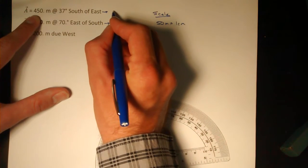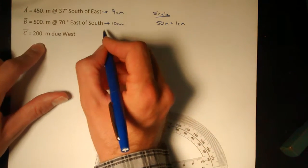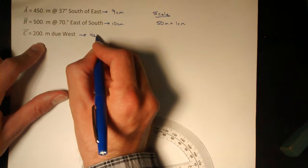450 meters would be represented by 9 centimeters, and 200 meters would be represented by 4 centimeters.